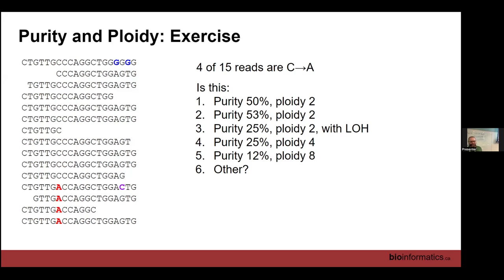I've been a little bit tricky here — number six is in fact the correct answer. Because we do not have enough information, any one of these could be correct or something else. Is it purity 50%? Is it purity 53%? We have no way of distinguishing based on this, because the number of reads you get at any location is random. We could just as easily have 20 reads here, or we could have 10. This is the outcome of a random stochastic process. We have some unknown proportion of tumor in normal DNA, and the tumor DNA itself has some unknown copy state. Based on just one mutation, it is completely impossible to tell what the purity and ploidy status is.